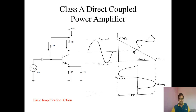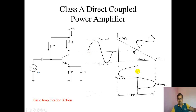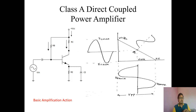We kept this Q point exactly at the center for voltage amplifiers. Here also in Class A direct coupled, we are keeping it at the center — because we want a full swing for the current and a full swing for the voltage. I told you that you can compare the amplification action with amplitude modulation. In amplitude modulation, the amplitude of a carrier signal changes with respect to the modulating signal.